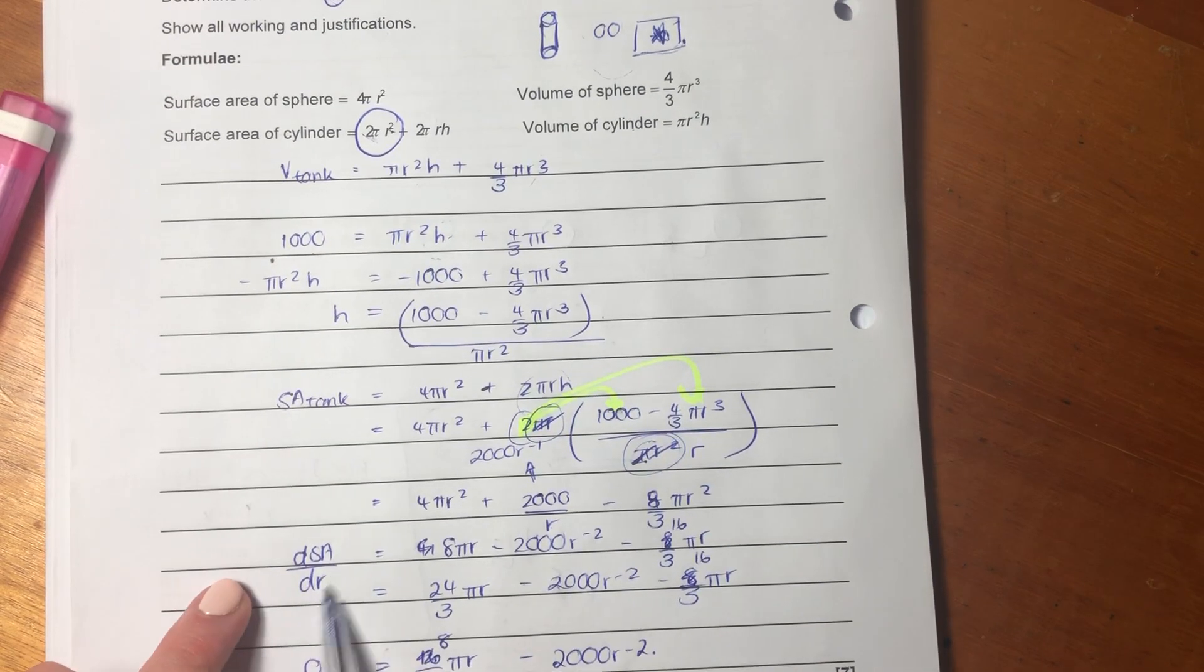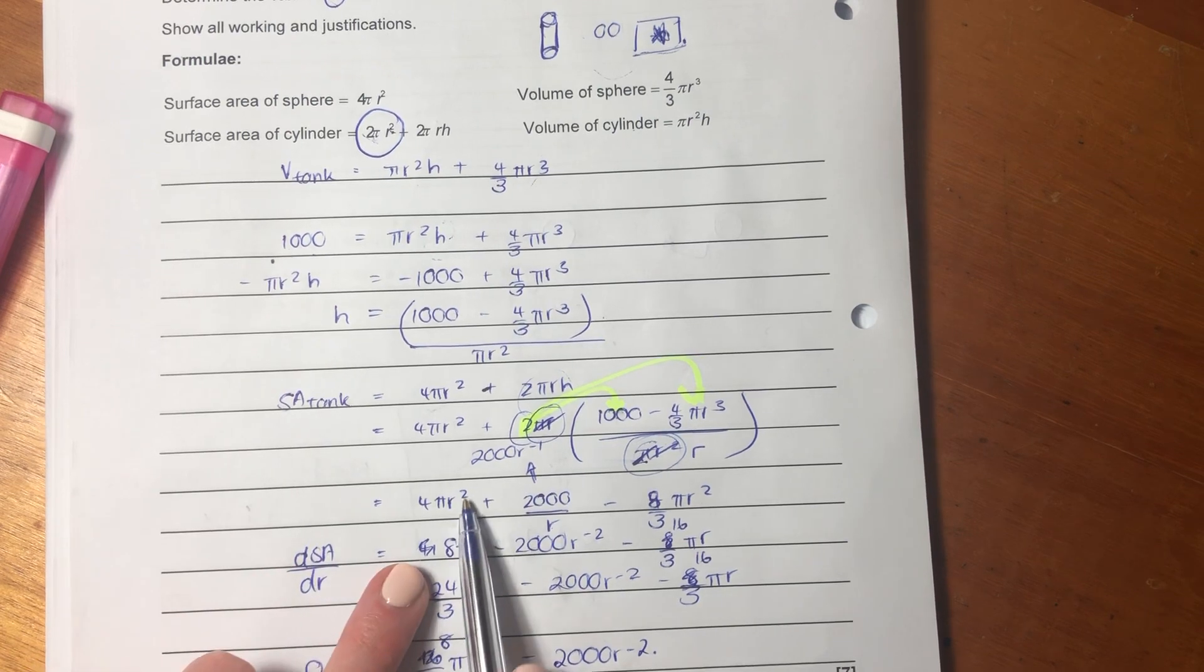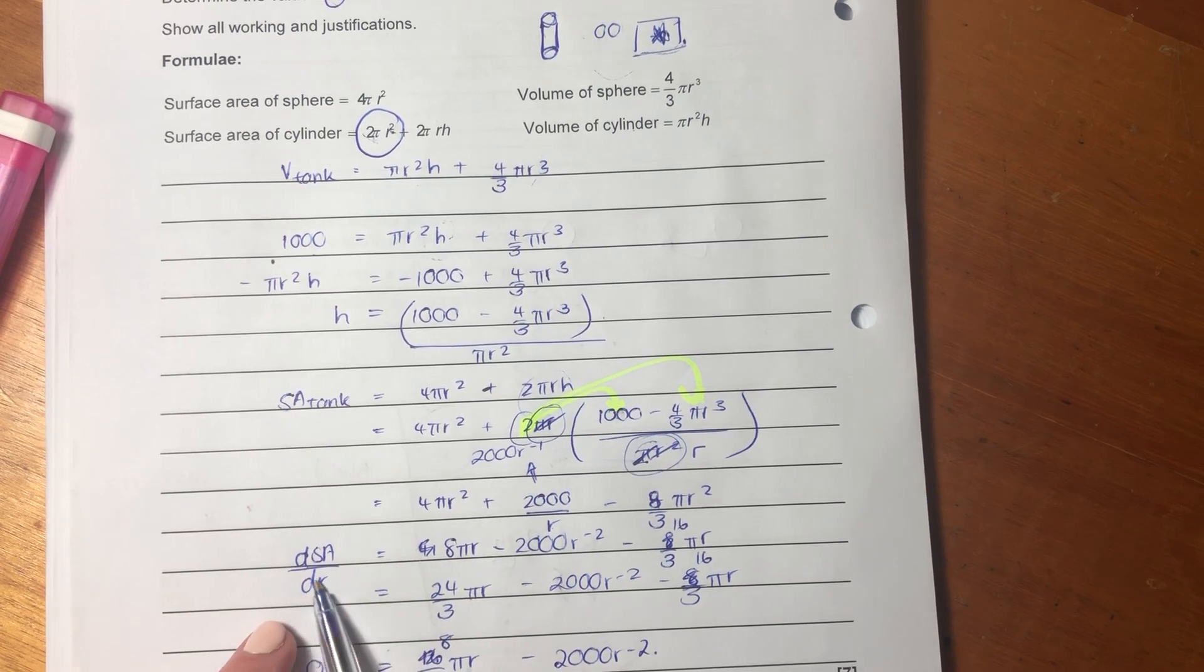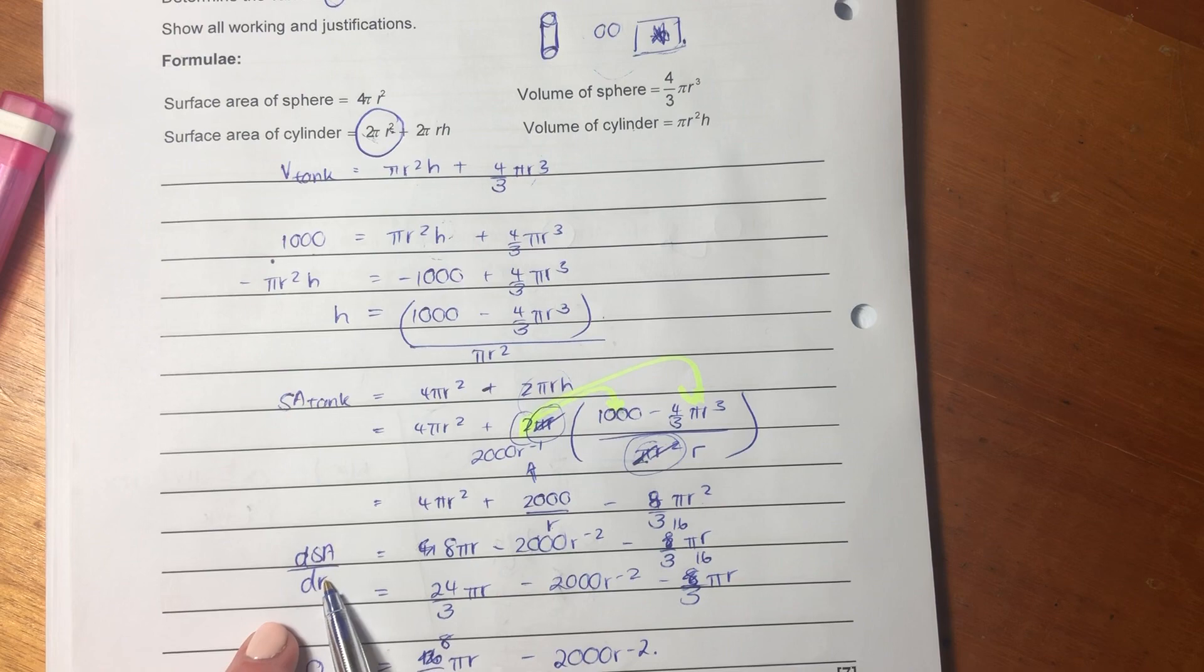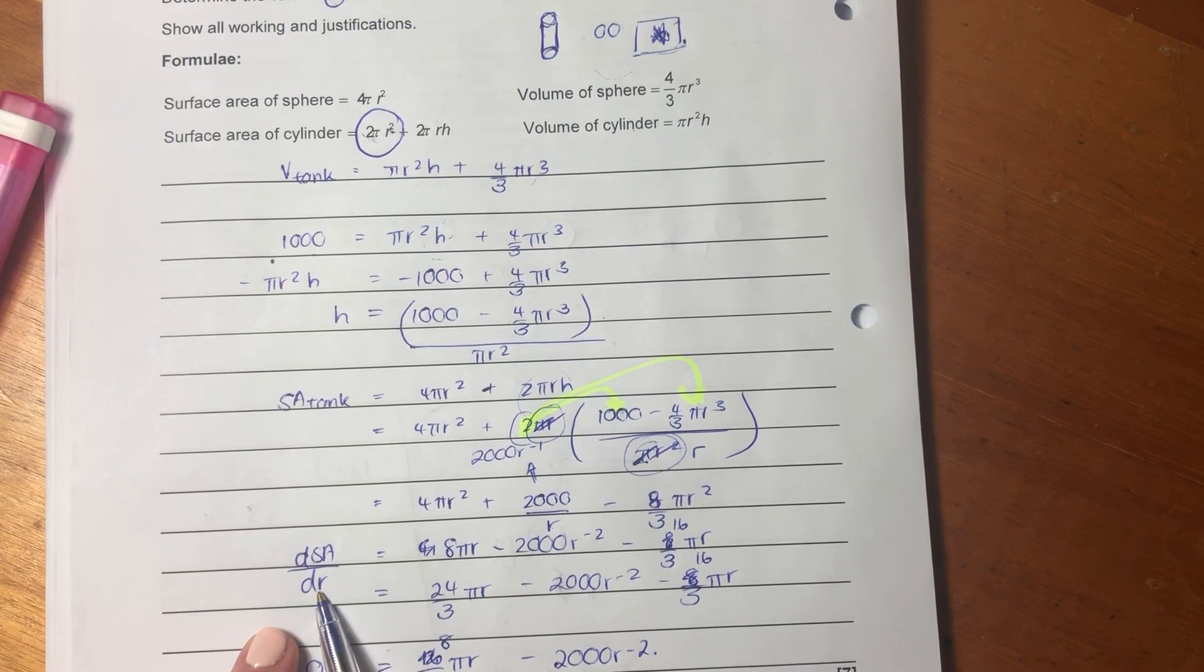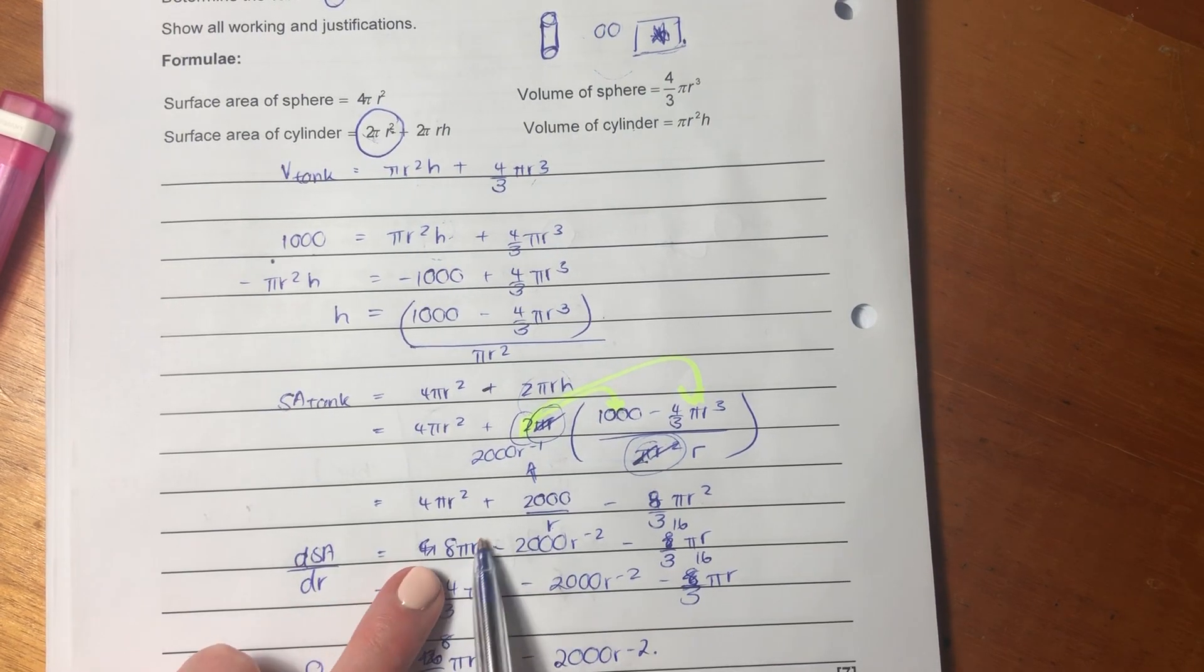So, I get the derivative. Get the derivative. Remember, we're doing it in terms of the derivative of the surface area in terms of the radius. So, I bring the two down, subtract one.